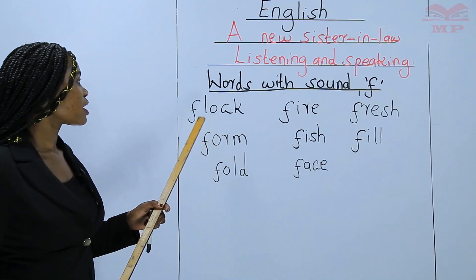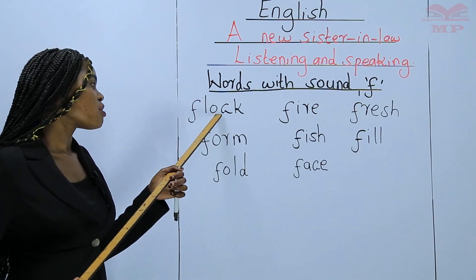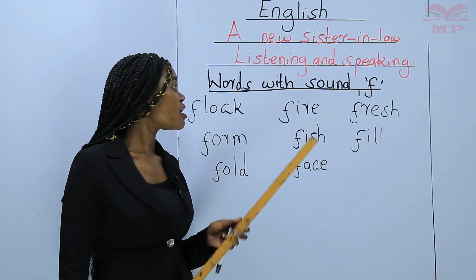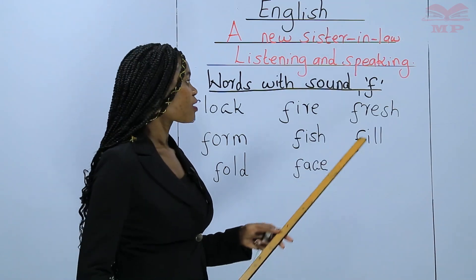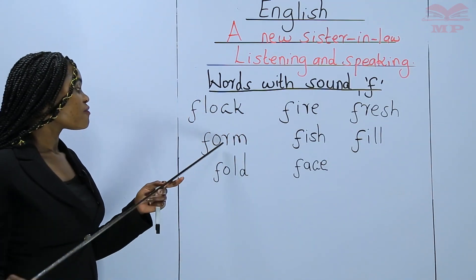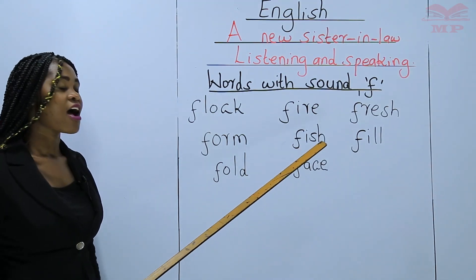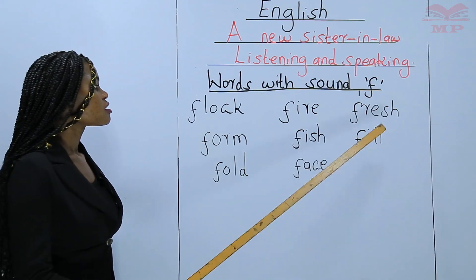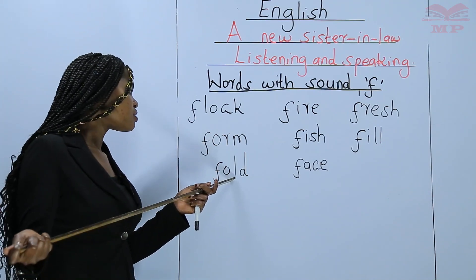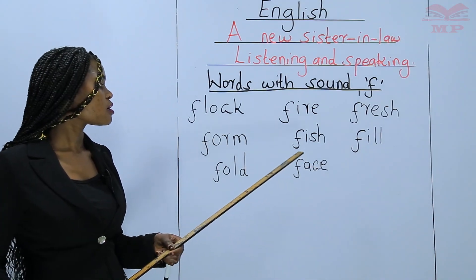Let's read the words together — you repeat after me. Make sure that you are repeating after me after each word. So the first one: flock. Flock. Fire. Fire. Fresh. Fresh. Foam. Foam. Fish. Fish. Fill. Fill. Fold. Fold. And lastly, face. Face.